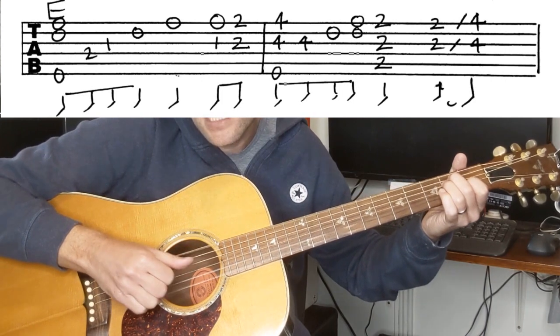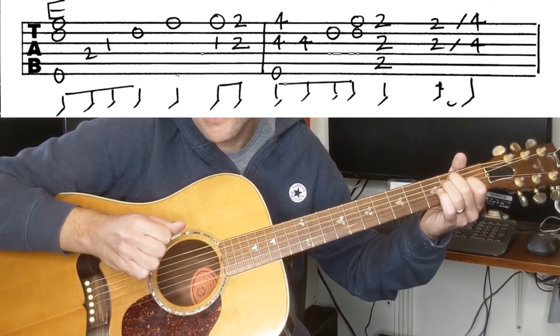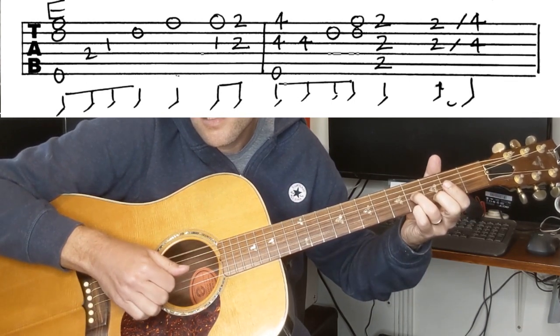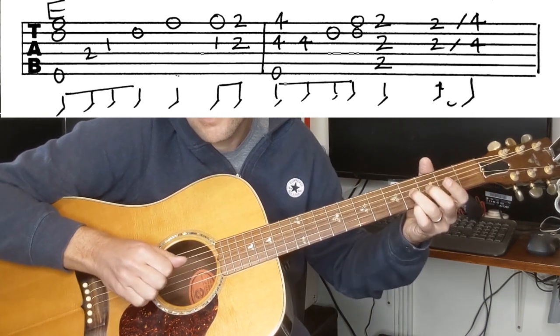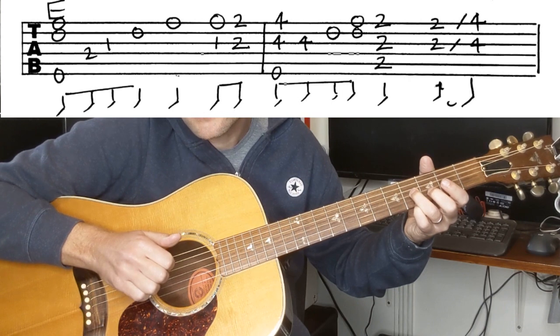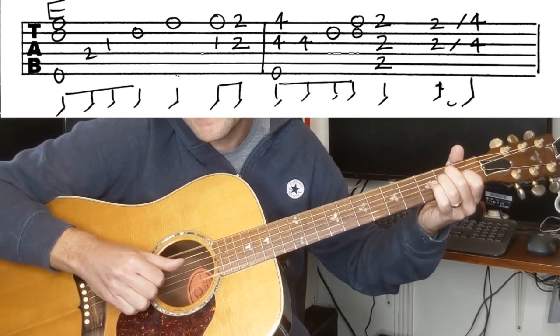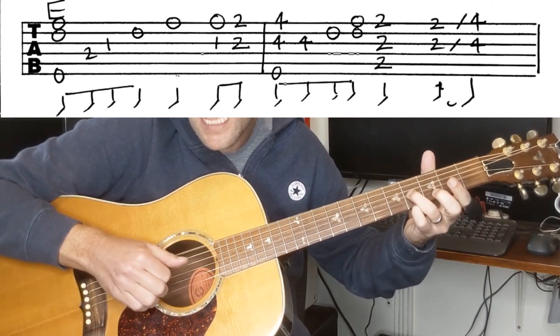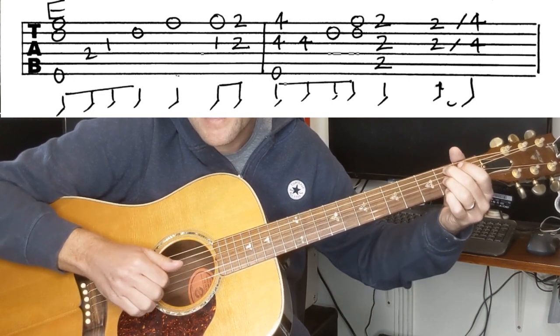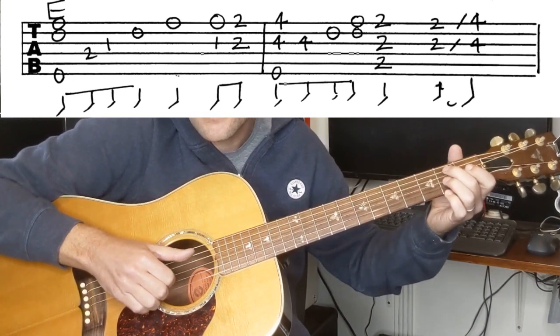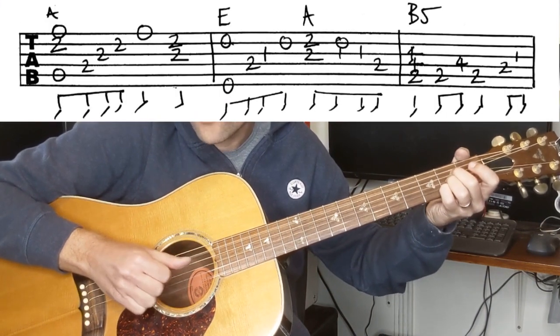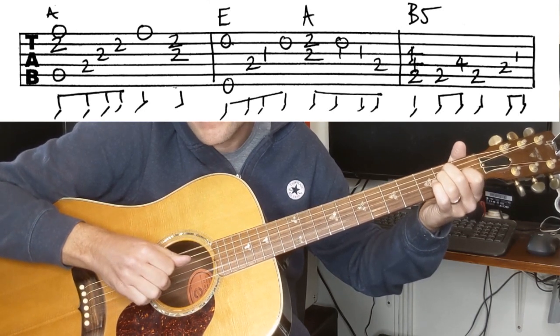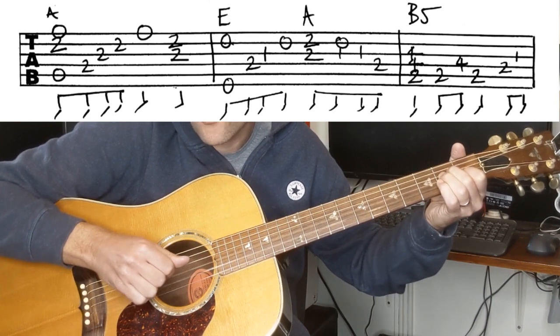Then we're going to go to the fourth line, which is E, and then we do another walk up. Same sort of thing, the timing is very slightly different. We've got E, and then we're going to go to A, and then E, and B.